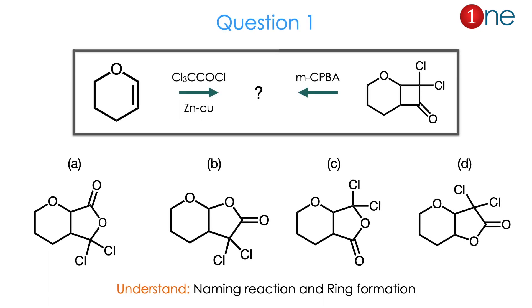Let us see question number one. The starting material is a six-membered system with oxygen conjugated with a double bond. You are using a chlorinated acid chloride and zinc-copper couple. The same product is asked from a different starting material — a four-membered ring with carbonyl and Cl₂. Two reactions give the same product; they ask you to find it. The products are cyclized ones and the answer is D.